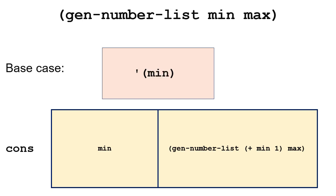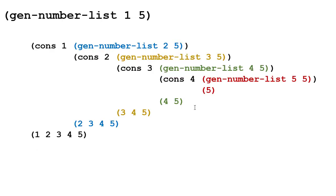Our base case is going to be a list with just min in it, and that'll happen if min is greater than or equal to max, so that this will work no matter what min and max are. If there are no numbers between min and max then min will be the only element in the list. Otherwise we're going to cons the min value onto the result of a recursive call to gen-number-list, adding one to min each time until we reach the maximum value.